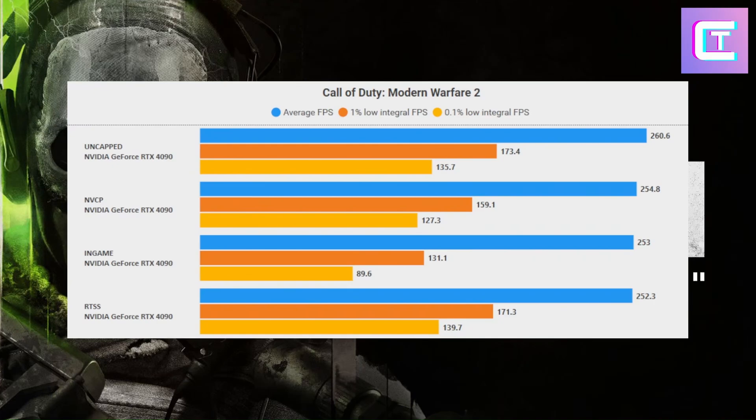Starting out with Modern Warfare 2 — uncapped does get slightly higher FPS, but look at those lows. Nvidia Control Panel and the in-game cap are not very good. The in-game cap is actually the worst one you can use here. Maybe use it to cap FPS in the lobby to something like 60 FPS, but otherwise I would not recommend it. RivaTuner Statistics Server is very good — basically tied with uncapped. So if you are going to cap your FPS, definitely use RTSS with Warzone 2.